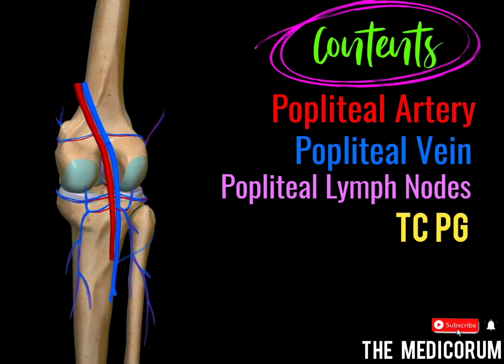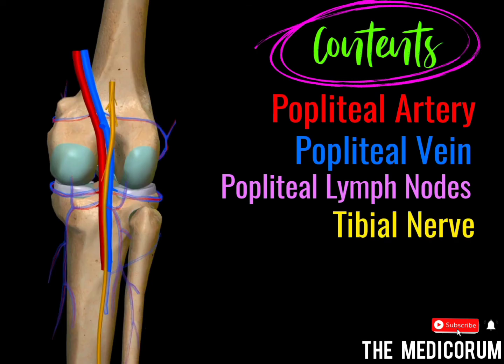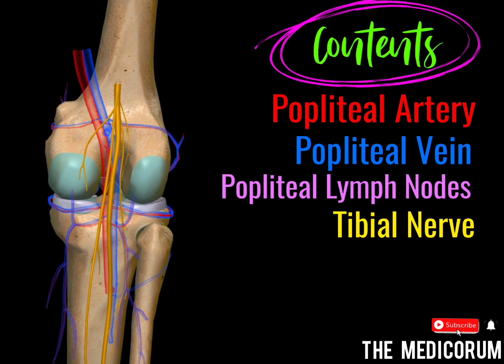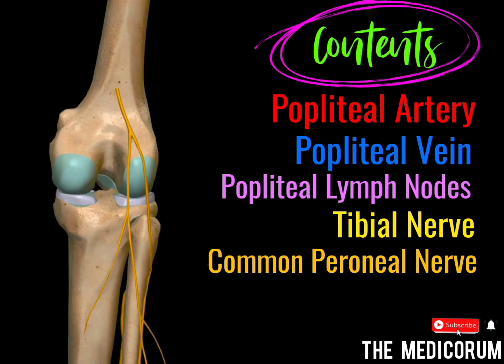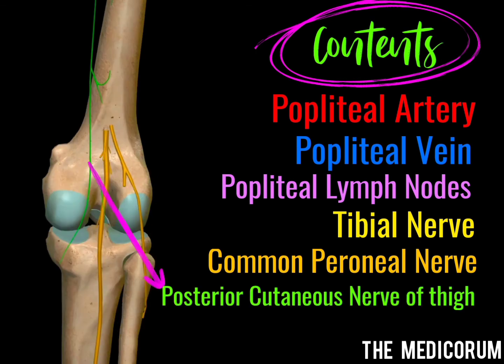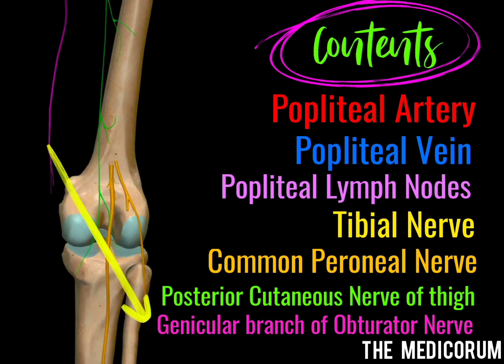In the mnemonic TCPG, TC stands for 'take care' and PG stands for 'post-graduation.' T is for the tibial nerve and its branches. C is for the common peroneal nerve and its branches. P is for the posterior cutaneous nerve of the thigh. And G is for the genicular branch of the obturator nerve.